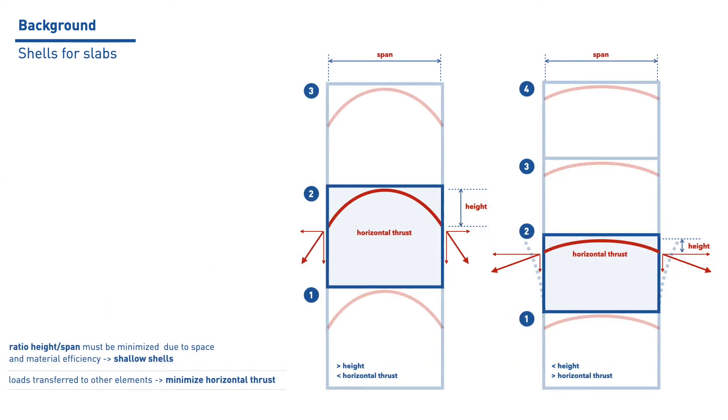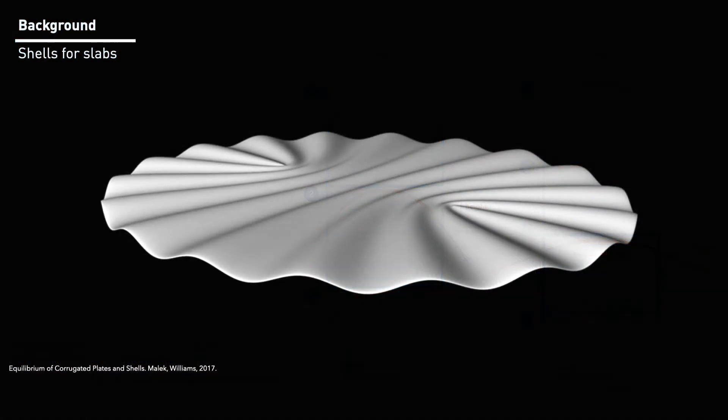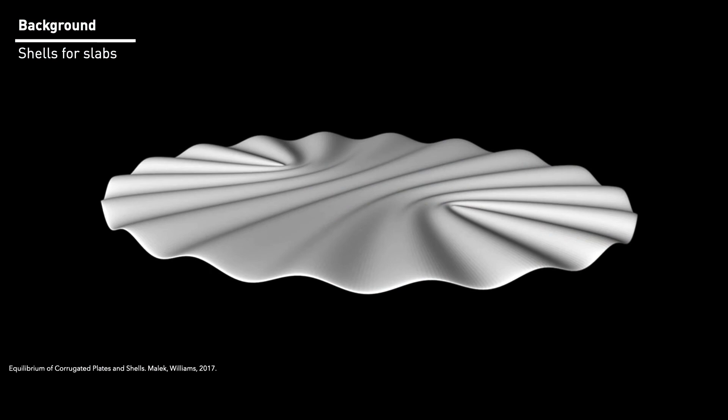In addition, space efficiency demands shell slabs to be as shallow as possible. This translates into a high horizontal thrust against the supporting walls, typically solved by adding ties, horizontal beams or reinforced walls. For this research, this is meant to be tackled by a combination of form and fiber orientation, so the components transmit only vertical loads to the walls. At the same time, buckling is aimed to be solved by promoting the undulation of the surface, as its effectiveness has been already proven by Malek and Williams.